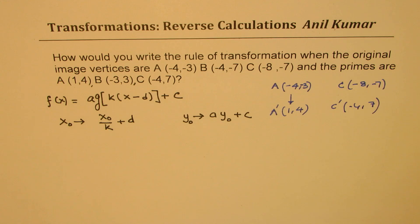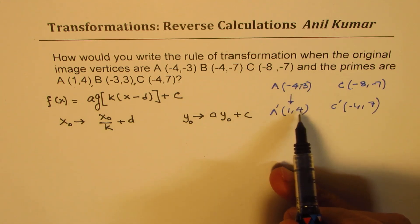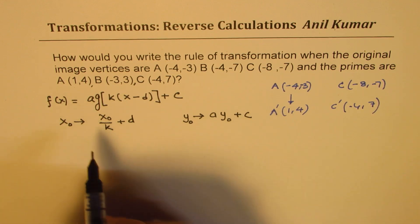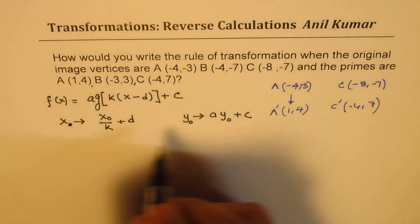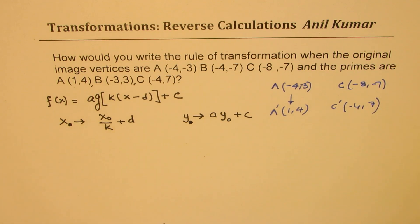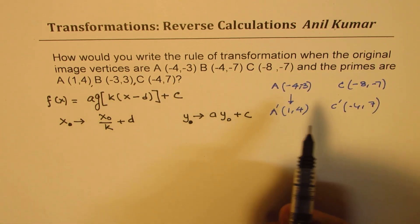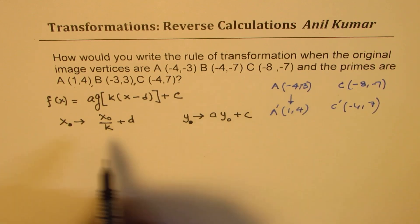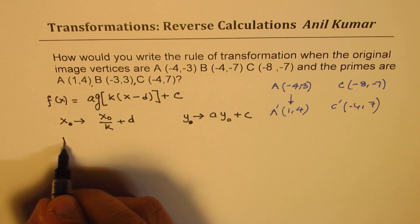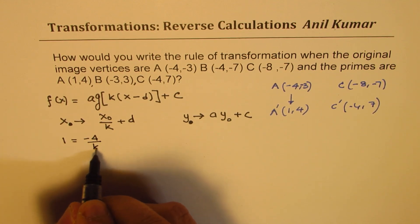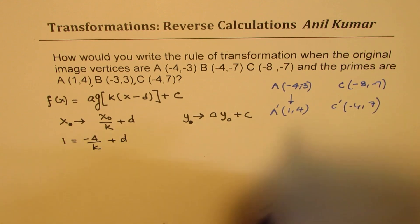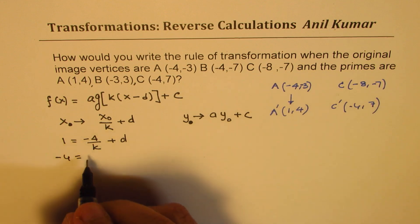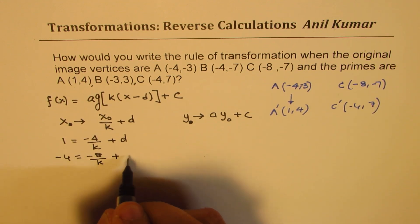Now you'll notice that this is a transform point. After this transformation, that is what you get. So the transformed x value is 1 from the original value of -4. We can substitute here, so we get 1 = -4/k + d. Using the second point, we get -4 = -8/k + d.